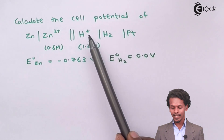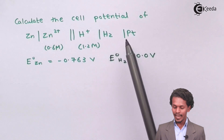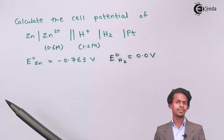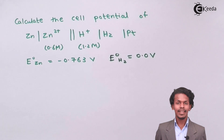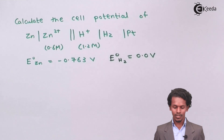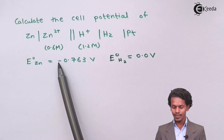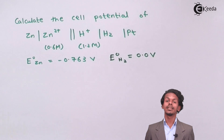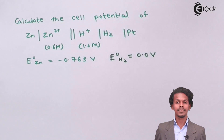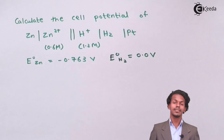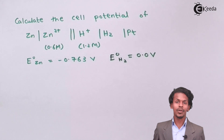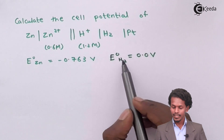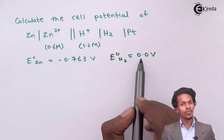The concentration of H⁺ in this case is 1.2 molar and platinum is used as an inert electrode. The standard cell potential E° of Zn is given as −0.763 V, and the standard cell potential of hydrogen is always 0 V.